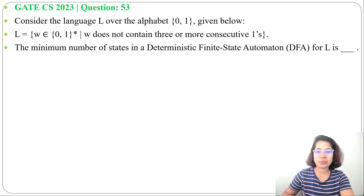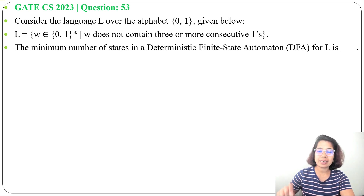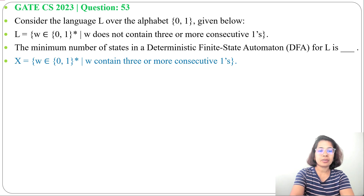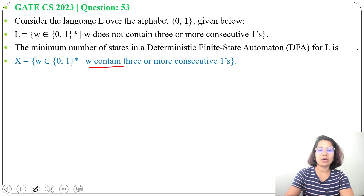The easiest way to construct the DFA is to first create the DFA for the complement language X — where W contains three or more consecutive ones — then complement it. Let X be the language where W belongs to {0,1}* and W contains three or more consecutive ones.